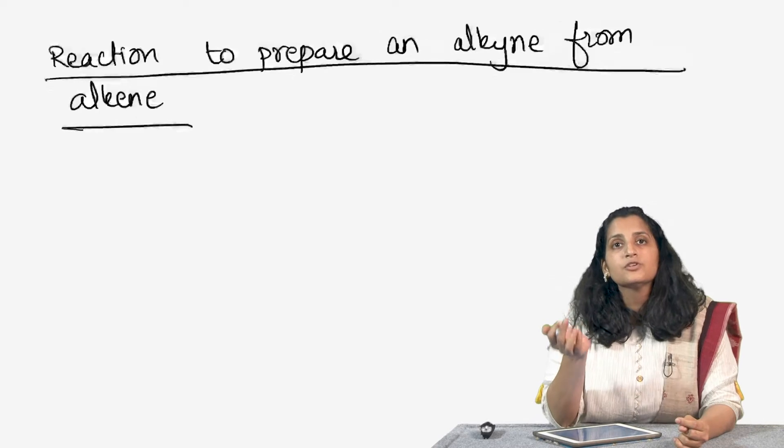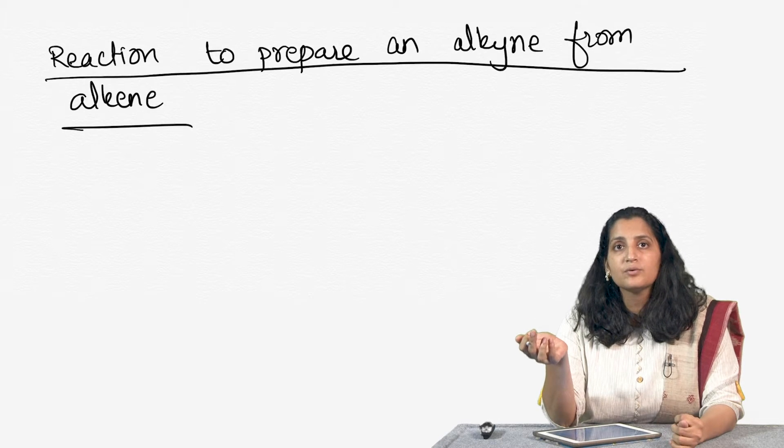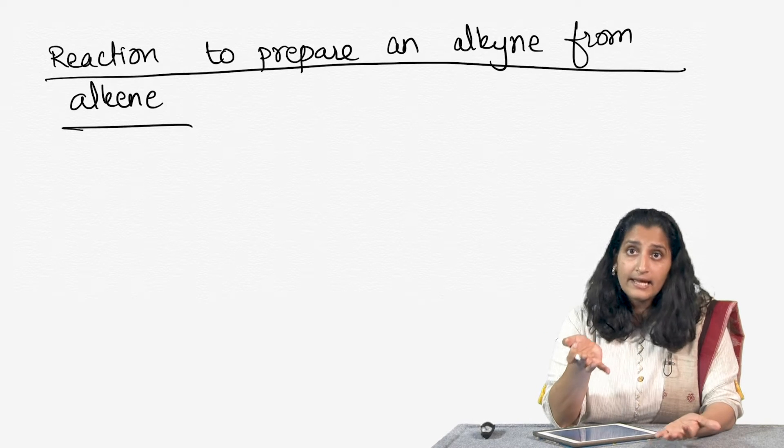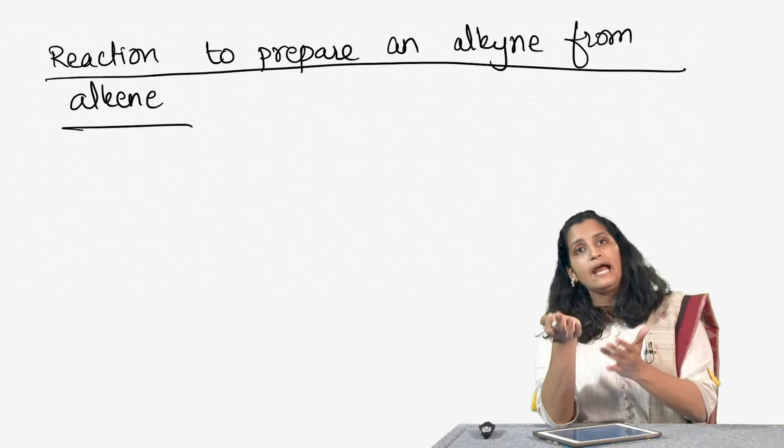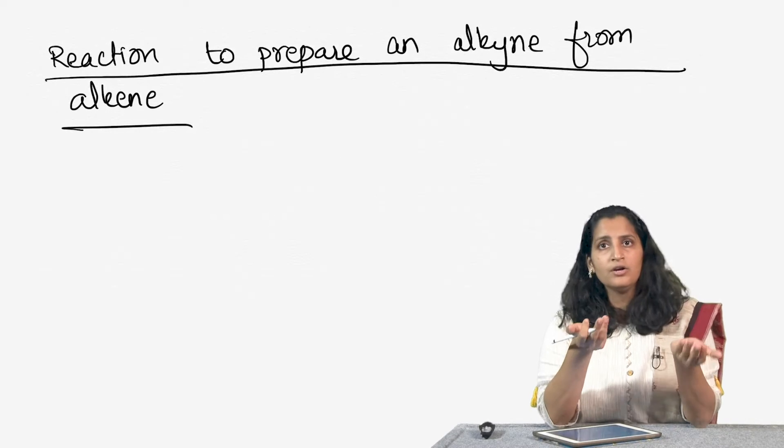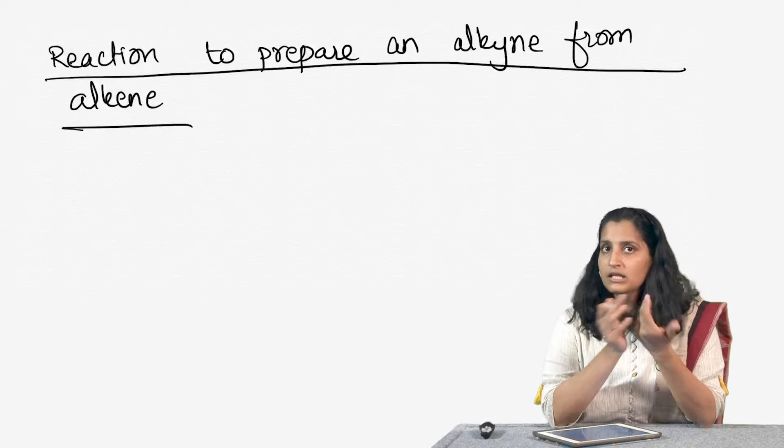We are going to look at one more reaction which is very important synthetically, and once we look at retrosynthesis you will see the use of this particular reaction. Now, we are going to see how to prepare an alkyne from an alkene. In order to do that, we are going to take the alkene first and then react it with either bromine or chlorine to give us the dihaloalkane.